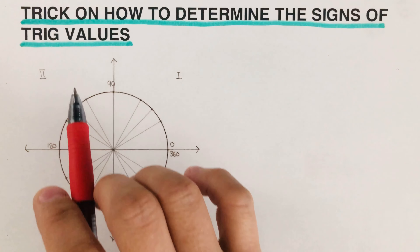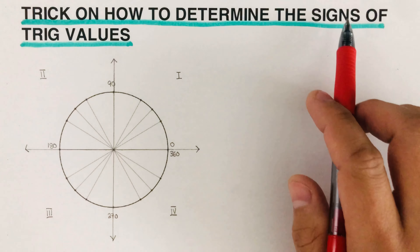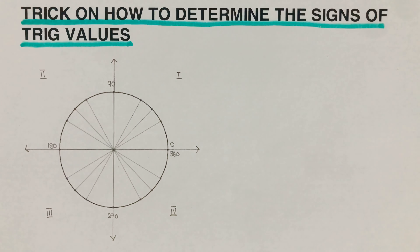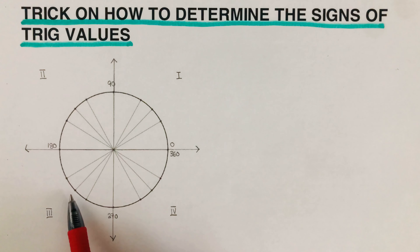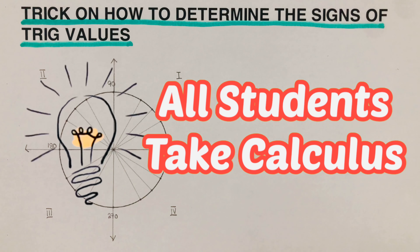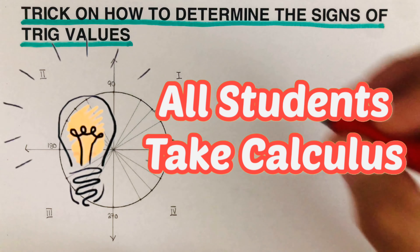Hello everyone. In this video we're going to focus on the trick on how to determine the signs of trig values. The sign we're referring to here is either positive or negative — for example, what is the sign of the cosine in the third quadrant? Is it positive or is it negative?